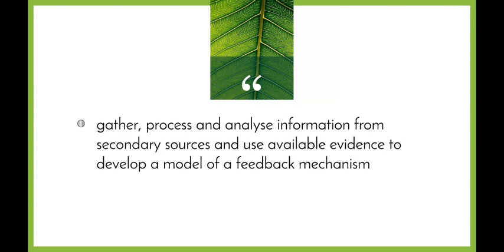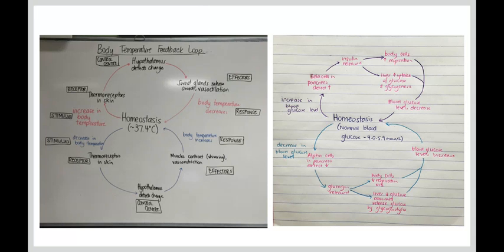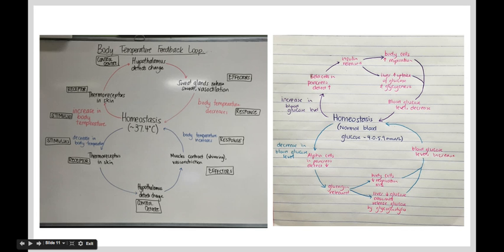The next dot point, which we'll look at in more detail in class, is: gather, process and analyse information from secondary sources and use available evidence to develop a model for feedback mechanisms. We need to be able to draw specific feedback loops looking at the stimulus, response, and effectors for at least one specific process that happens in the body. Here we have temperature and blood glucose level, which have a two-way pathway — one showing what happens when there's an increase away from homeostasis, and one showing when there's a decrease. We'll look at these in more detail in class and create some together before you do some on your own.